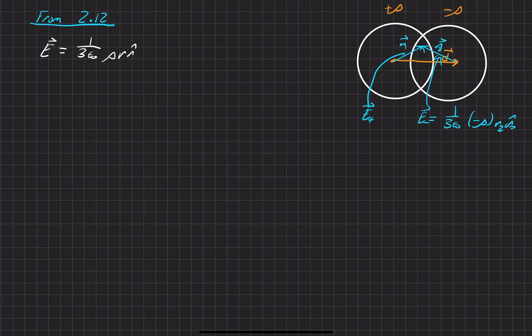Like I said, you can do positive or negative. And then for the positive one, that would be 1 over 3 epsilon naught times positive rho times r1 times the vector, unit vector of r1, to be consistent from here. So that's the electric field for within a spherical charge here.